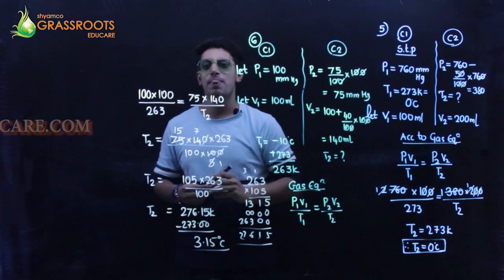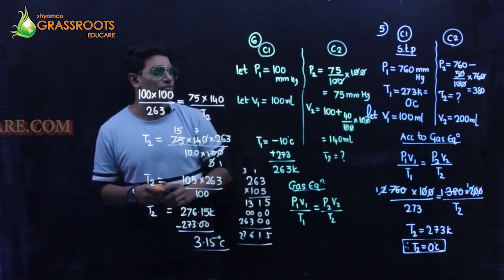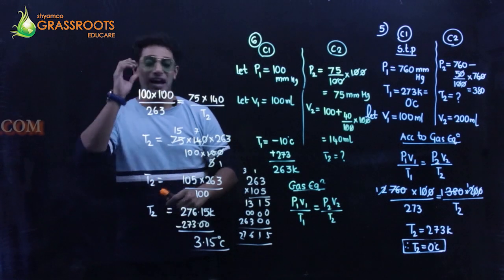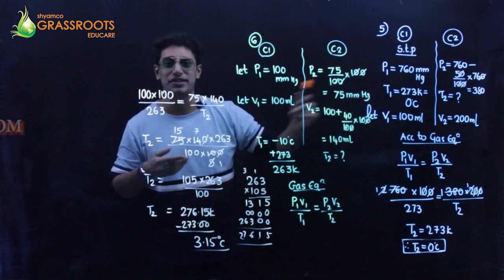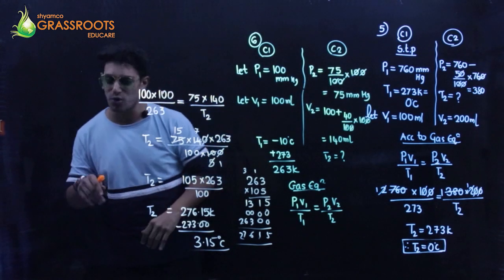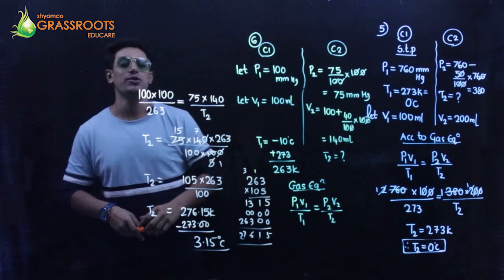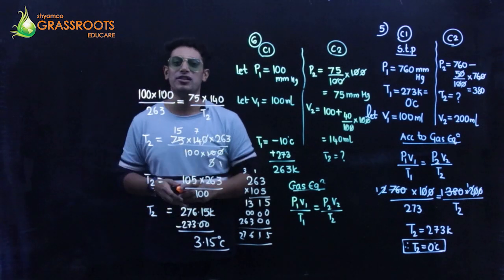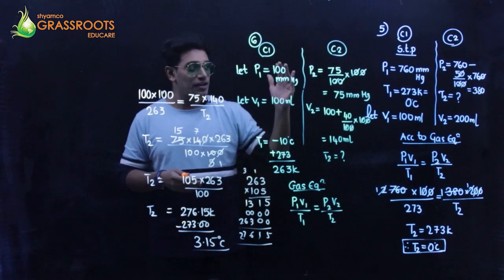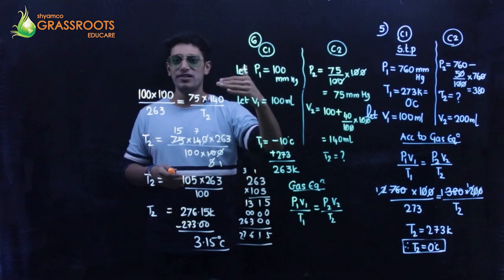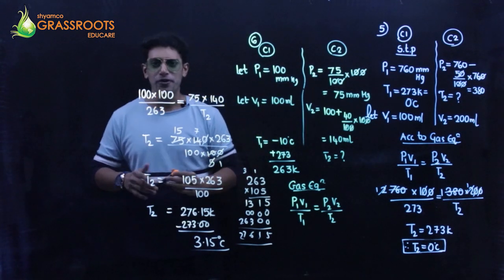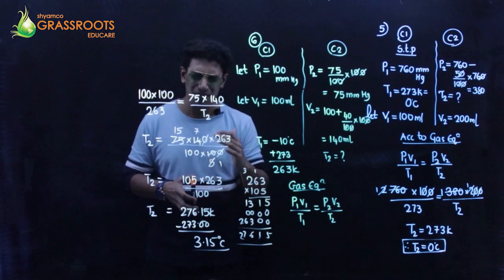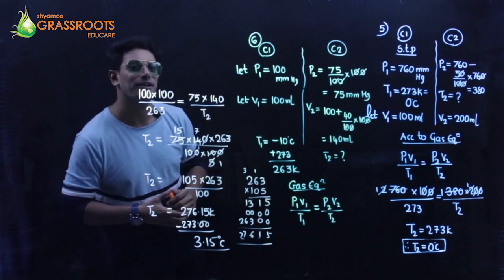So we have covered all the varieties of sums — assumption sums taking 100, the STP sum, and the normal sum. Six questions as a crash course covering Boyle's law, Charles' law, and the gas equation. Hope you've understood the entire chapter; it's a very simple and scoring one.